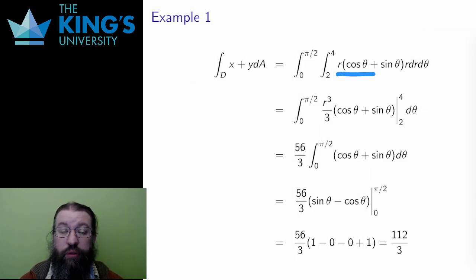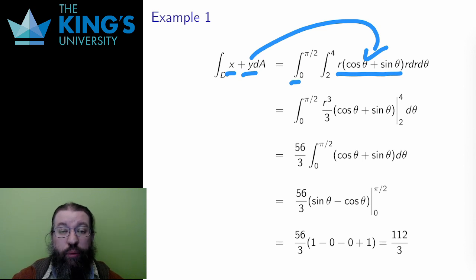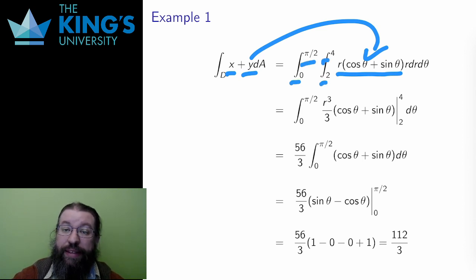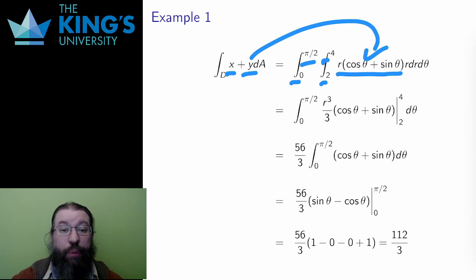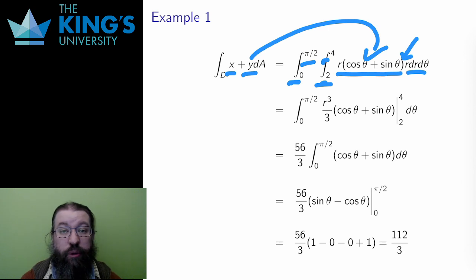These were the coordinate transformations from the last video. Here is the setup then. The region D is the region with the angle between 0 and pi over 2 and the radius between 2 and 4. x plus y becomes r times cos theta plus sin theta. I put in the Jacobian r, and I order dr and d theta to match up with the bounds. After doing this, I have an integral in polar coordinates.